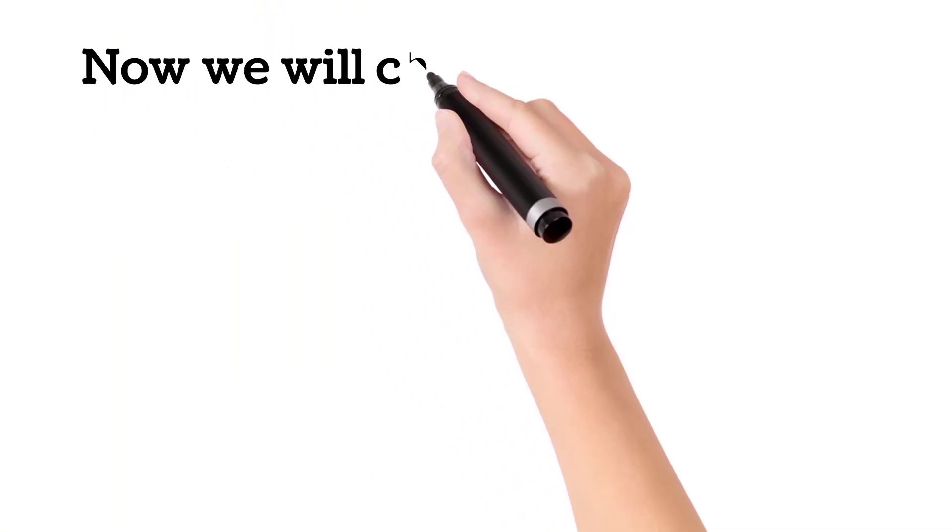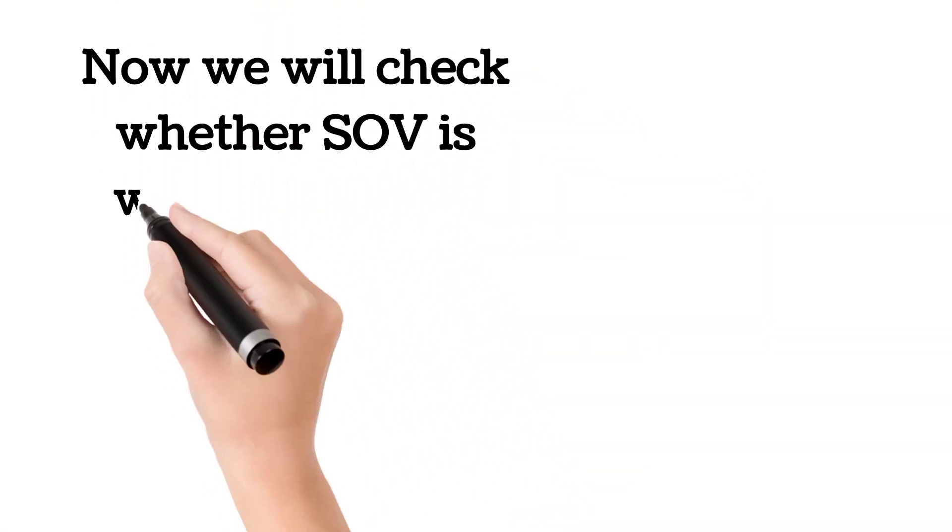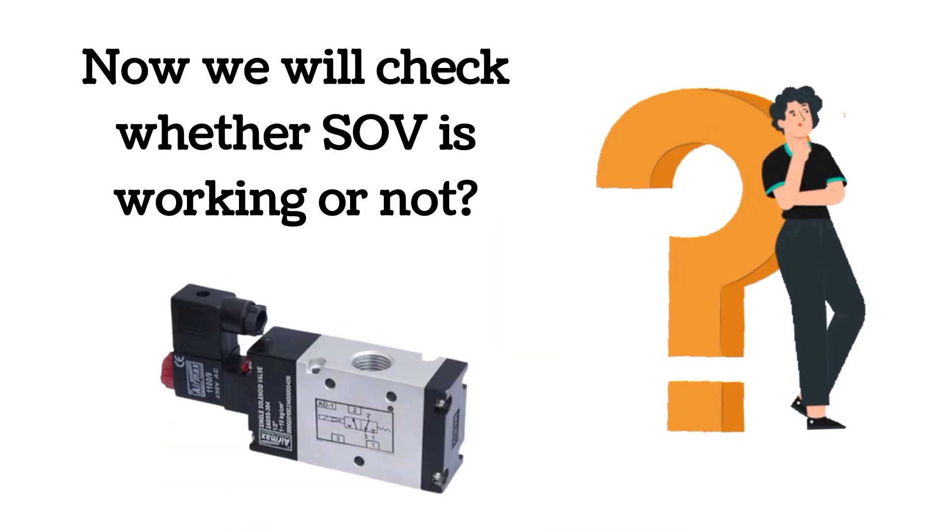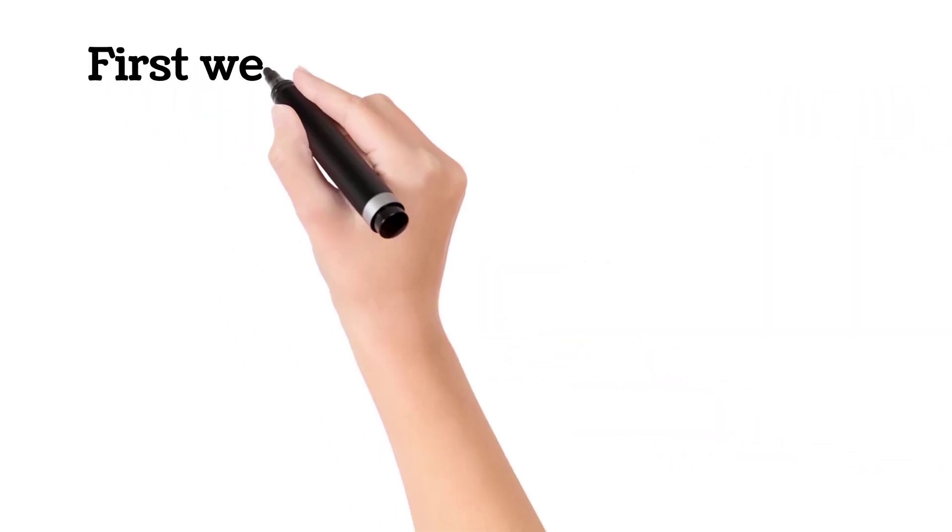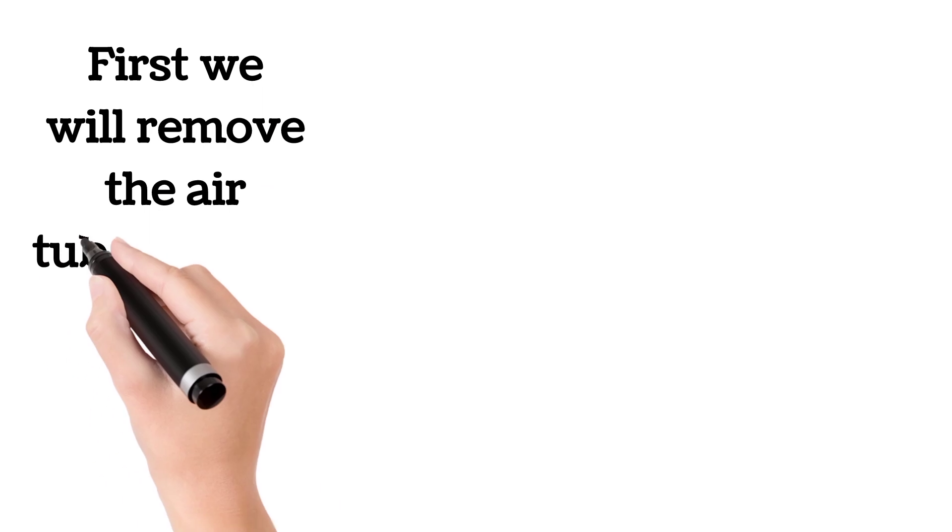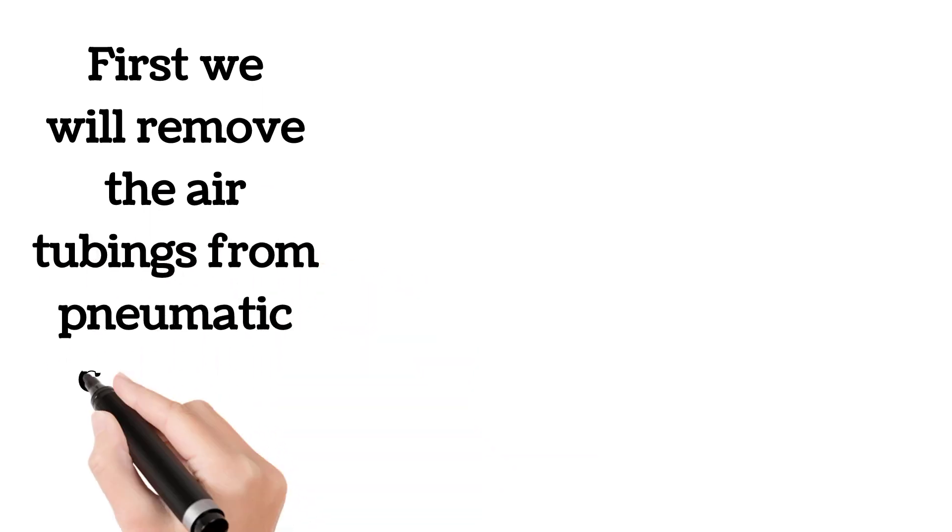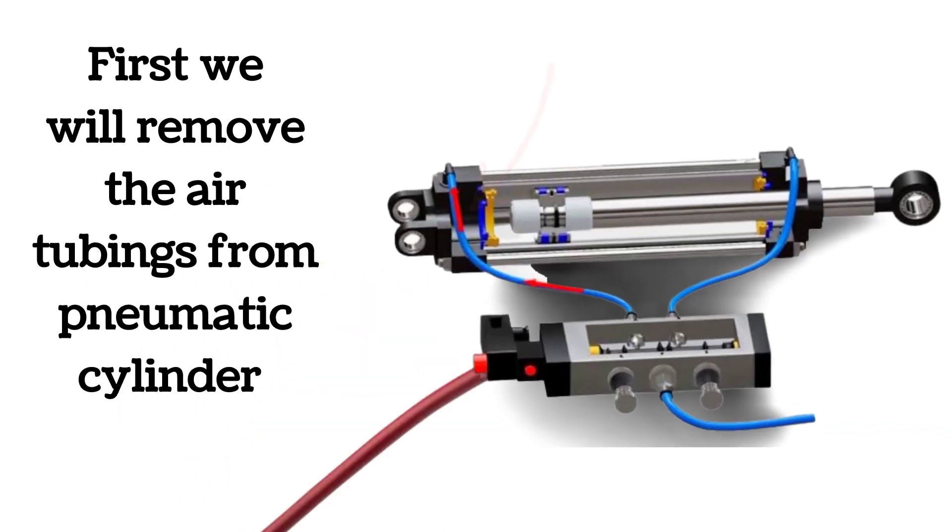Now, we will check whether SOV is working or not. This is an important step, so watch it carefully. To check the working of a solenoid valve, first we will remove the air tubings from pneumatic cylinder. Air tubings connections are shown by arrows.